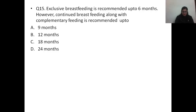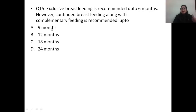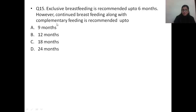Question number fifteen: exclusive breastfeeding is recommended up to 6 months; however, continued breastfeeding along with complementary feeding is recommended up to — A) 9 months, B) 12 months, C) 18 months, D) 24 months. The correct answer is option D, 24 months. Exclusive breastfeeding remains 6 months, but once complementary feeds are added at 6 months, the mother can continue breastfeeding until the child is 2 years of age. These are recommendations of the NNF and BPNI (Breastfeeding Promotion Network of India).